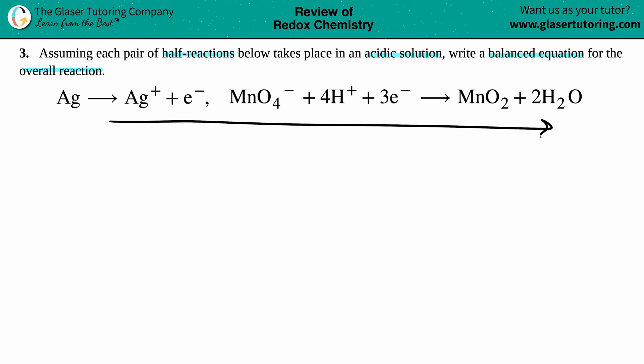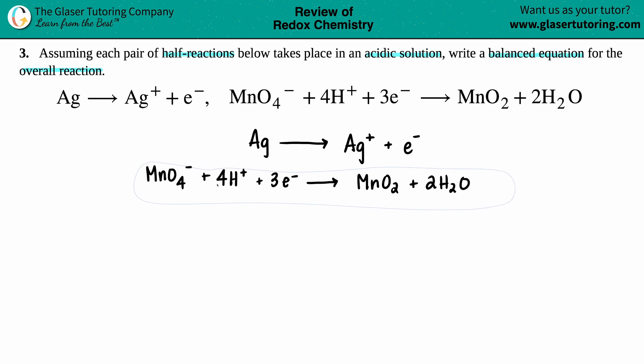Instead of trying to do this problem by looking at it from left to right, what I like to do is stack these equations on top of each other. It doesn't matter which one goes on top and which one goes on the bottom. So I'll just put the Ag yields Ag+ plus one electron, and then I have MnO4- plus 4H+ plus 3e- yields MnO2 plus 2H2O.